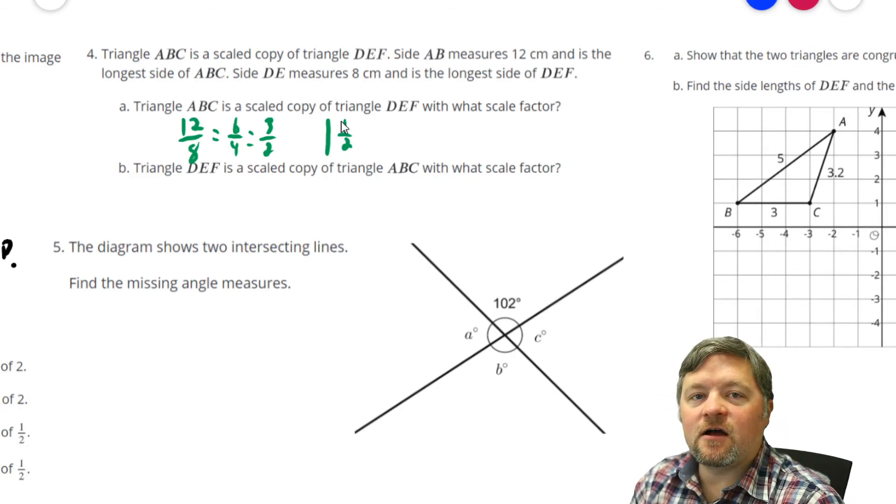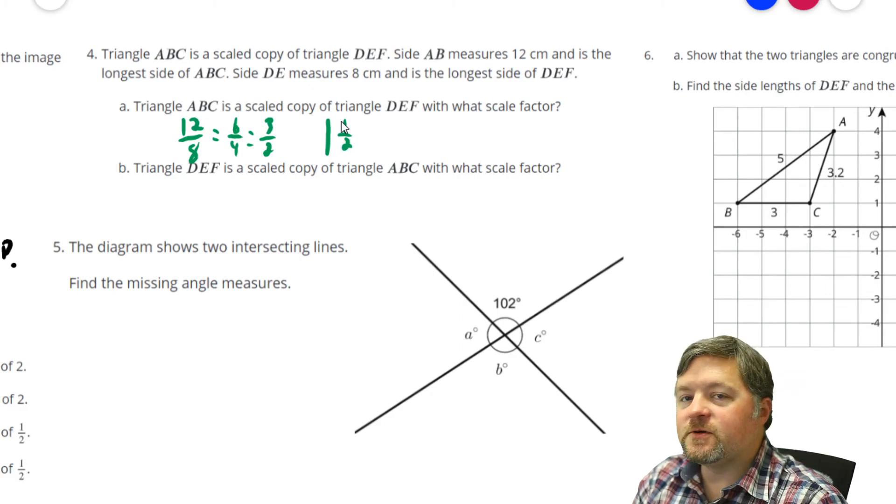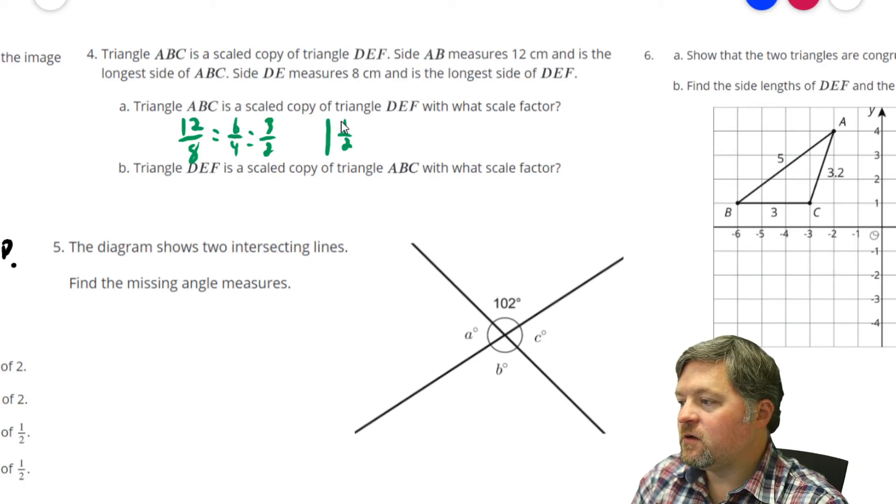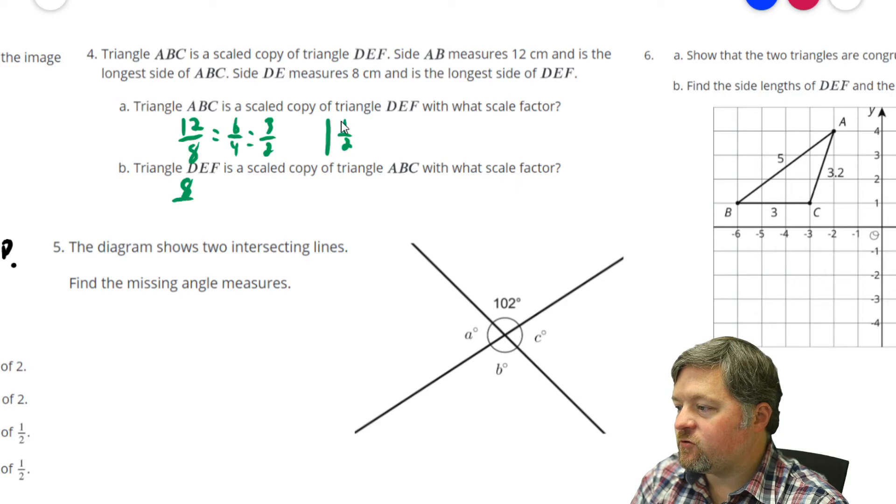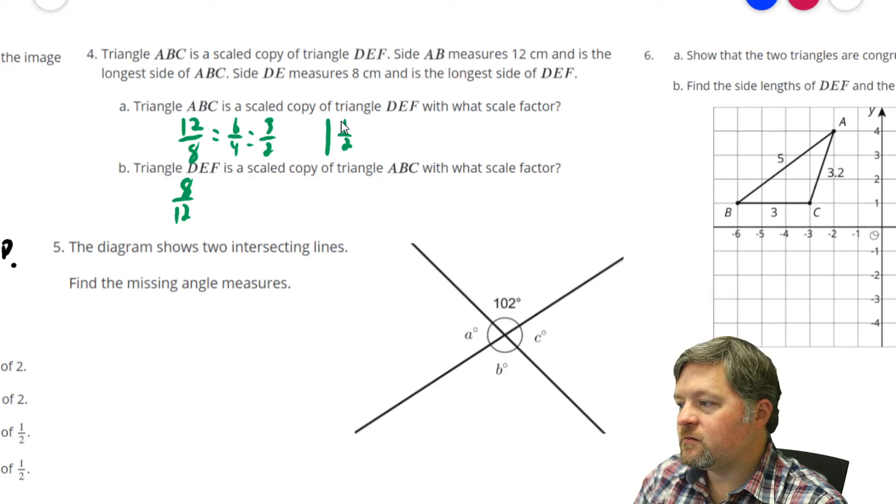Now, DEF is a scaled copy of ABC. What is the scale factor? Well, now we're going the other way. We are going from 12 to 8, which means our scale factor has to be less than 1. So, our sides are the same. We just have to set up our ratio upside down. 8 over 12. Those are both divisible by 4. Let's skip the intermediate step. 8 divided by 4 is 2. 12 divided by 4 is 3. The scale factor is 2 thirds.